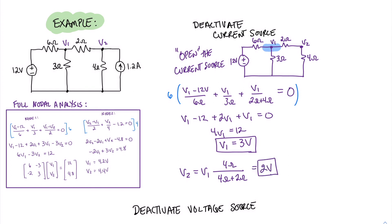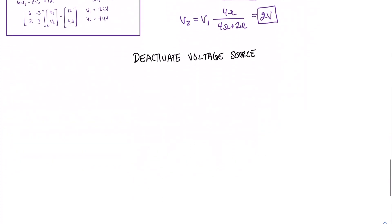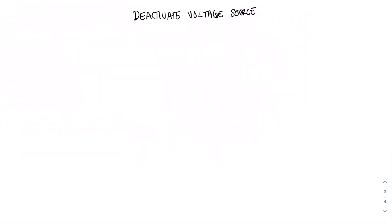Now let's do the second part of the superposition method. We need then to deactivate the voltage source and reactivate the current source. To deactivate the voltage source, that means that we replace the voltage source with a short. And now I'll redraw the circuit with the deactivated voltage source.